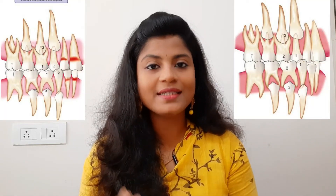Nance's method is similar to Tweed's method. They extract the deciduous first molar first, followed by extraction of the permanent first premolar, and then the deciduous canine.